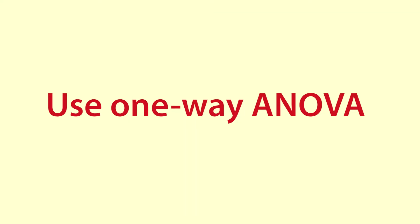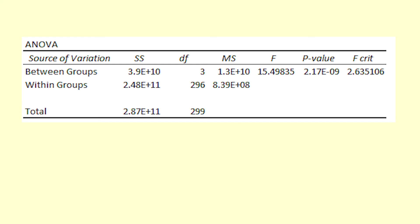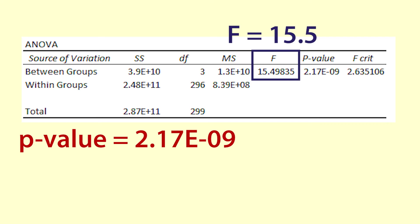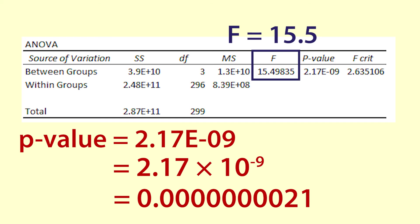We use one-way or single-factor analysis of variance to find the F statistic and the associated p-value. This output from Excel shows that the f-value rounds to 15.5 and that the p-value is 2.17e-09. This rather unusual looking number means 2.17 times 10 to the power of negative 9 which is 0.0000000217 which is pretty much 0.